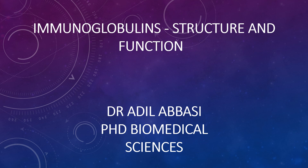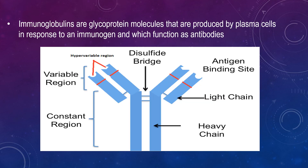Today we are looking at immunoglobulins and their structure and function. Immunoglobulins are defined as lipoprotein molecules that are produced by the plasma cells in response to an immunogen and which function as antibodies. Immunoglobulins derive their name from the finding that they migrate with globular proteins when antibody-containing serum is placed in an electrical field.